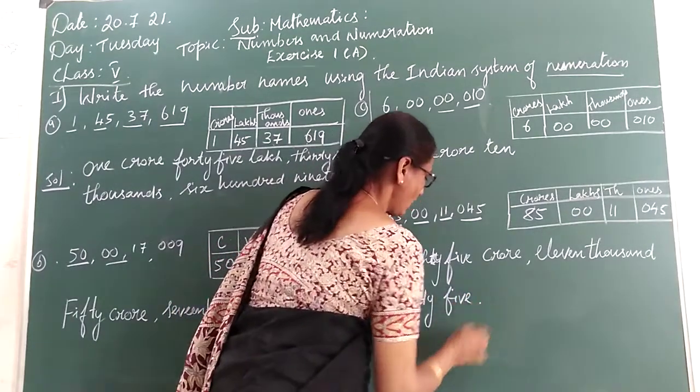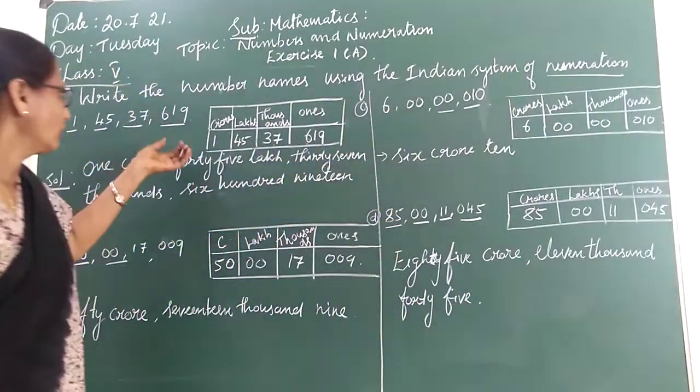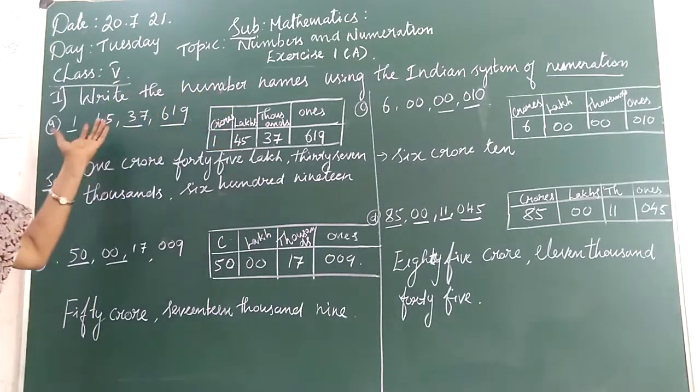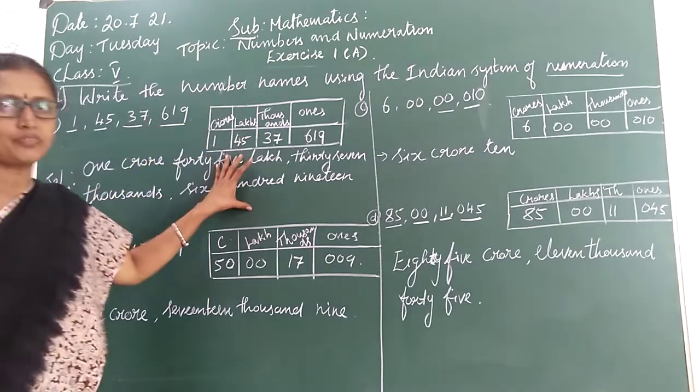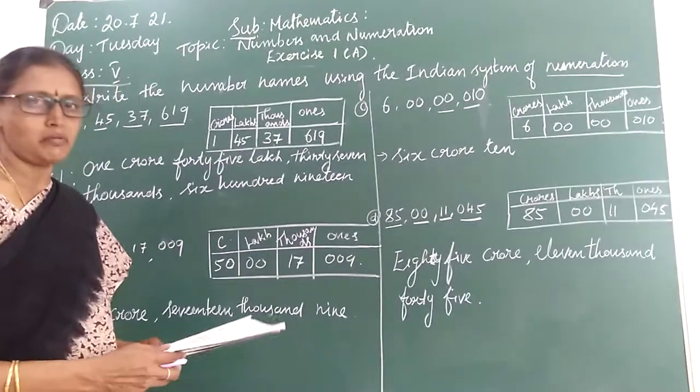This way after my dears, first you write in place value chart, then you write in number names children. Clear children? So we will continue the second name children.